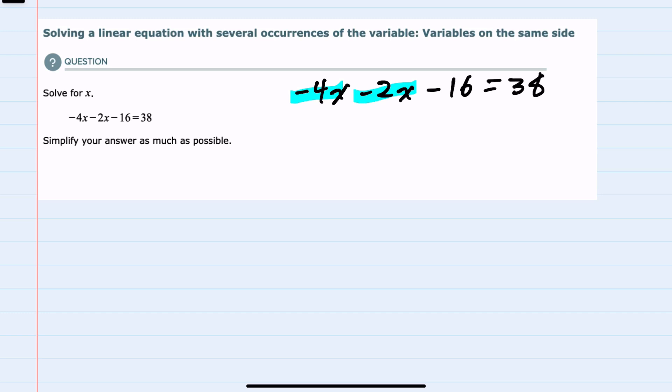If we have a minus 4x and a minus 2x, those combine to a minus 6x. And I can bring down the other parts of that equation. To continue solving for x, I would want to isolate that x.